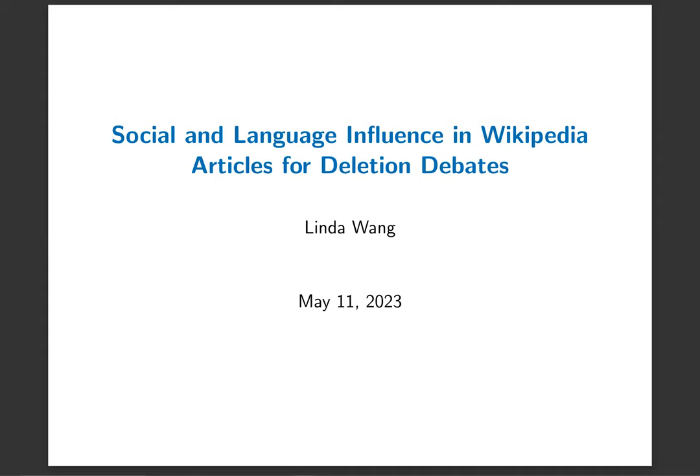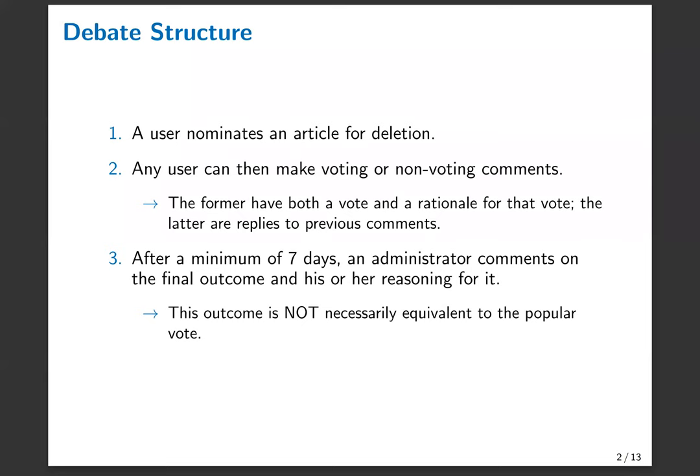So without further ado, let me jump right in and explain why articles for deletion is a great place to study this on Wikipedia. Here I have a brief outline of the procedure for nominating an article for deletion and how the debate goes. I want to highlight the key feature of these debates is that there are voting comments that consist of both a vote, for example, keep or delete, and a text rationale for that vote.